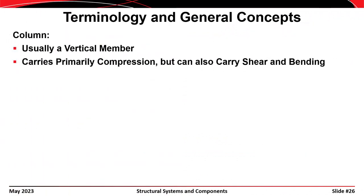Moving on from beams: a column is a vertical member in a building. What really defines a column is that it carries primarily compression. Some columns can also carry bending and shear — if they're on the exterior of a building with a girt attached, a lateral load may be introduced, so they might carry shear force and bending moment as well. But the primary action in a column is compression.